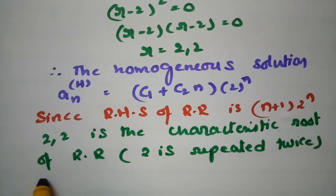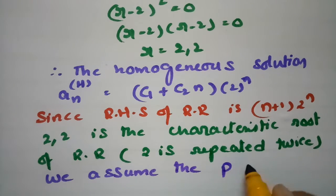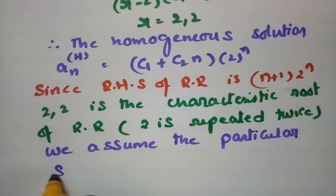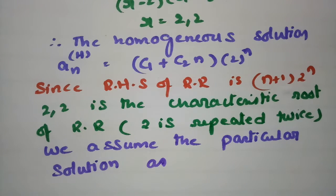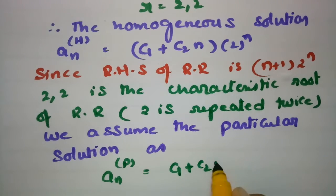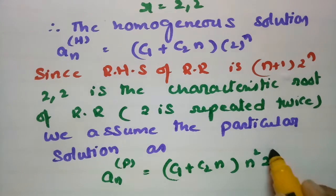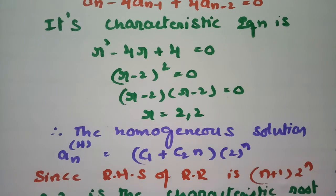We assume the particular solution An(P) = (C1 + C2·N)·N²·2^N, because 2 is a repeated characteristic root appearing twice. This is the particular solution, and the homogeneous solution is as derived. Now we use this particular solution in the given recurrence relation.